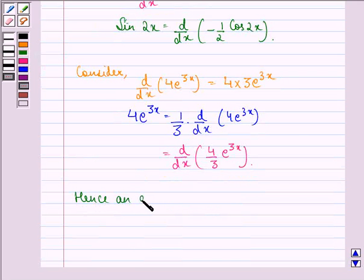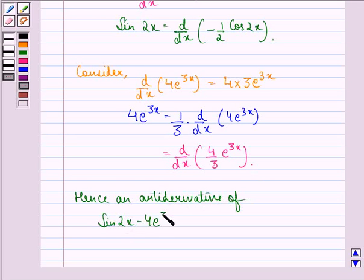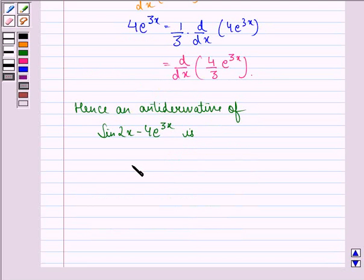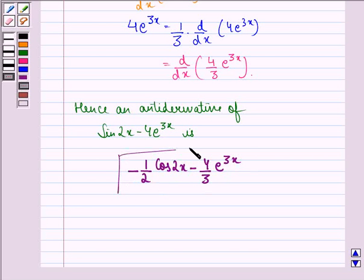Hence, an antiderivative of sin 2x minus 4 into e raised to power 3x is minus 1 by 2 cos 2x minus 4 by 3 into e raised to power 3x. So this is our answer to the question.